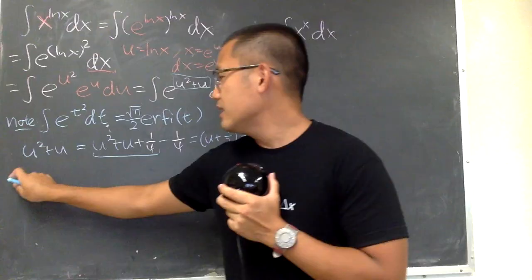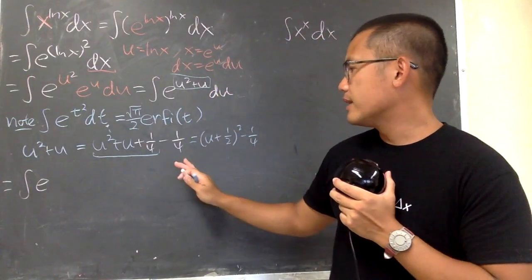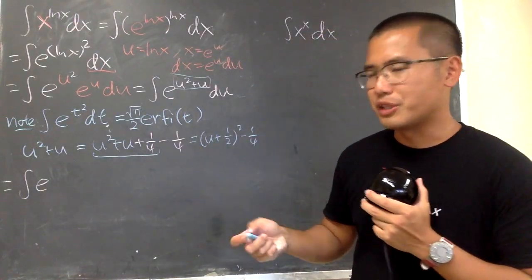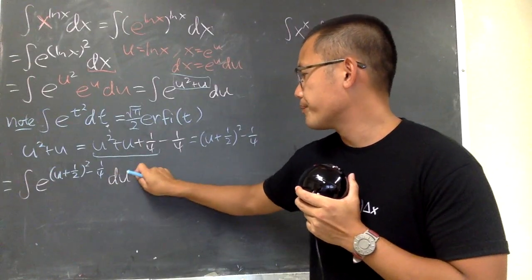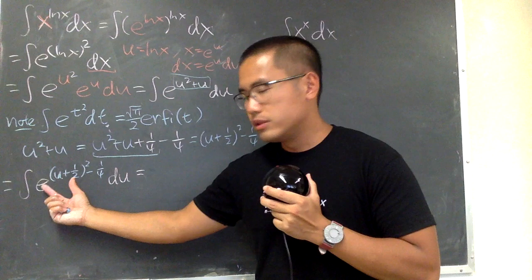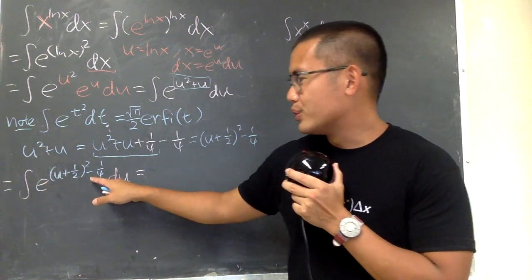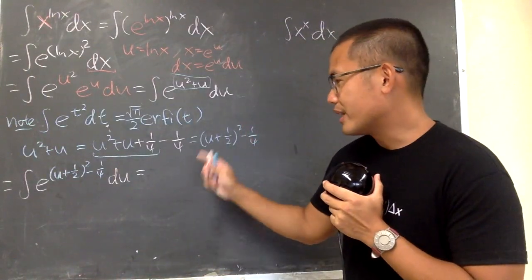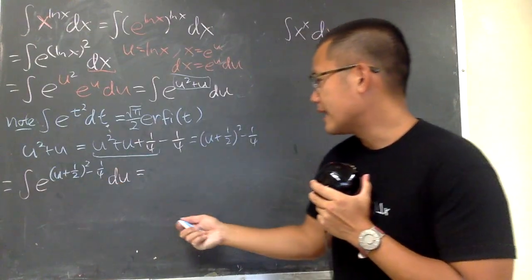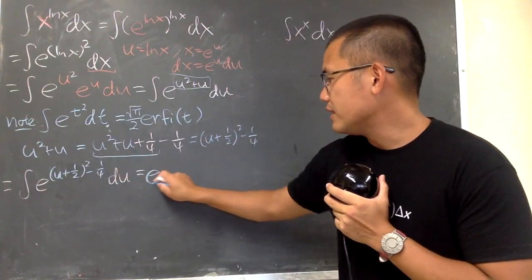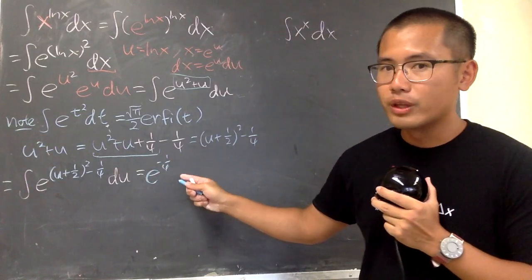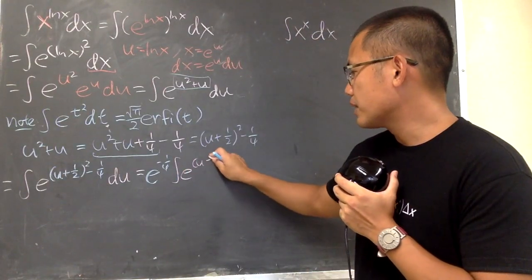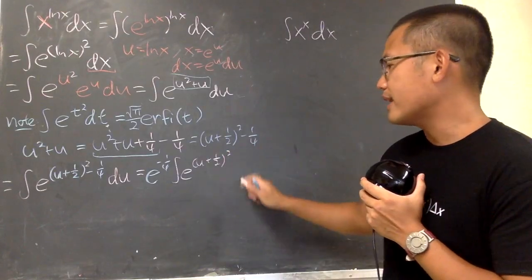To continue, we see that this right here will give us the integral of e. And let's look at this part, which is u plus 1 half, and then we have the du. This is the function part. When we have e to the negative 1 over 4, that's just a constant multiple. So we can take that to the front. We will just have e to the negative 1 over 4 power all the way in the front. It's just a constant. And then the integral of e to the u plus 1 half power squared, du.